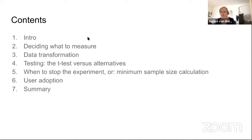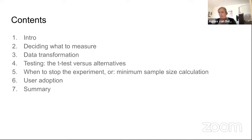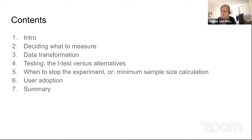Here is a brief overview of the contents. First, a general introduction to A/B testing and about Agnes herself. Then covering metrics and deciding what to measure, followed by data transformation needed before testing, then testing with t-test versus alternatives, where to stop the experiment using minimum sample size calculation, and finally user adoption and a summary.